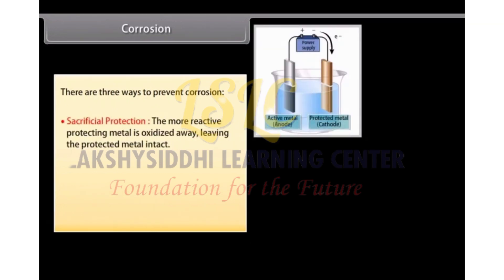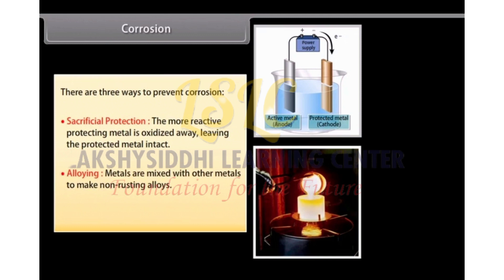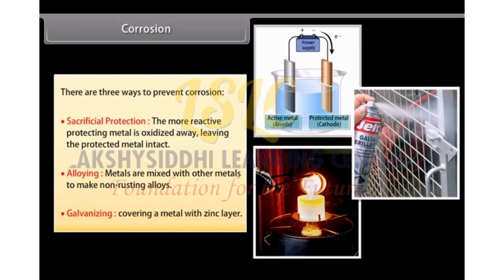Sacrificial protection where the more reactive protecting metal is oxidized away, leaving the protected metal intact. Alloying where metals are mixed with other metals to make non-rusting alloys. Galvanizing where a metal is covered in thin zinc layer. This layer is produced by electrolytic deposition.